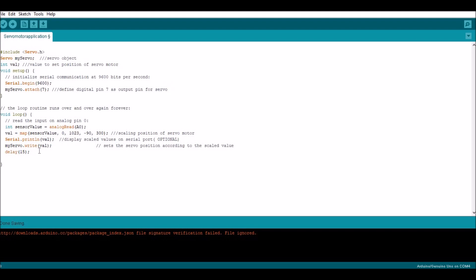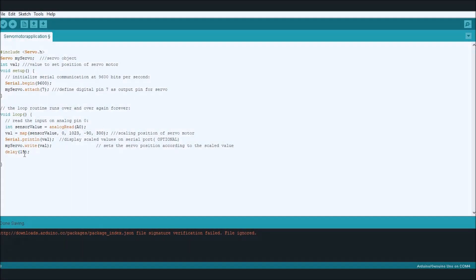myServo.write value. So this value after it's received from the sensor and it gets scaled, where do we send it? We send it to our servo motor. That's where the position of the servo motor occurs, so it's dependent on this value. This one's very important. And make sure to add this delay as well.